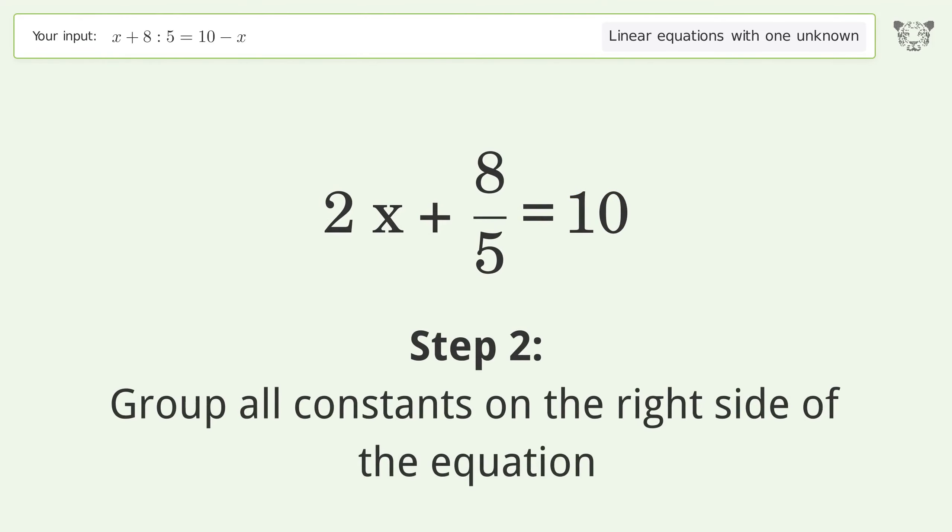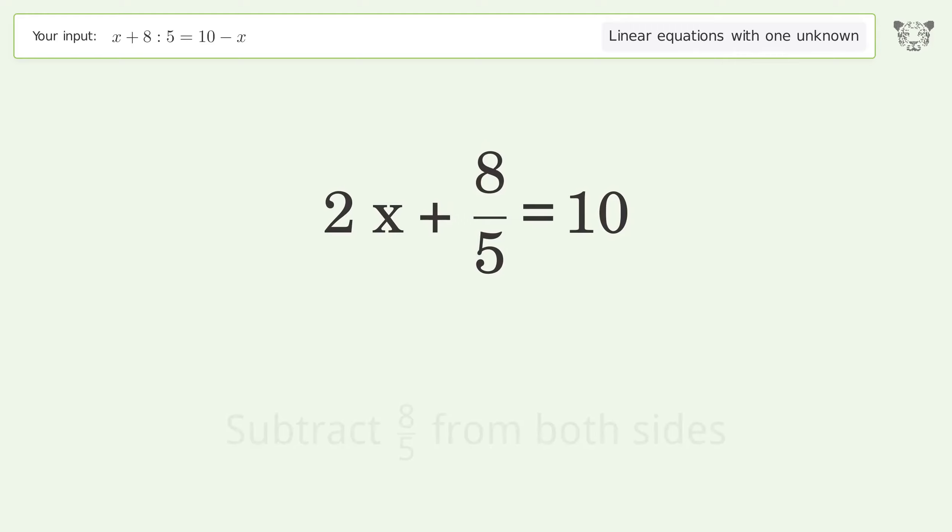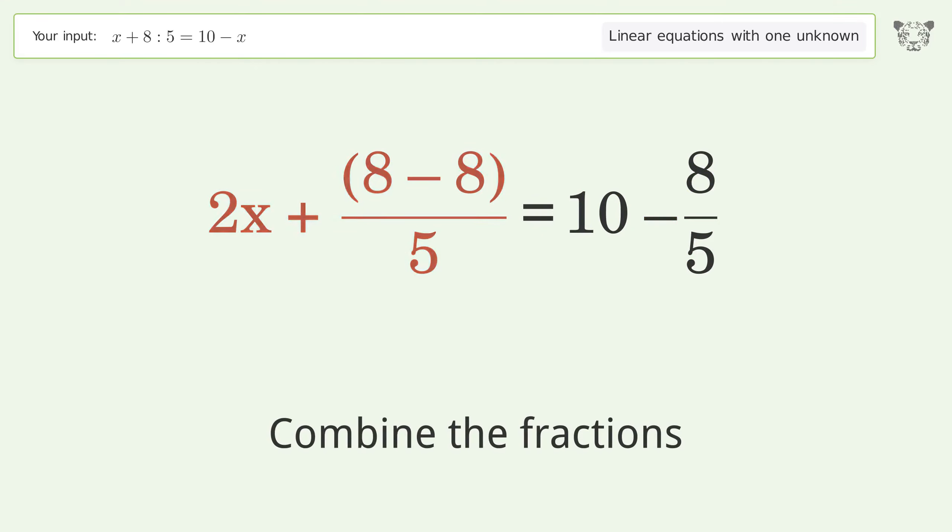Group all constants on the right side of the equation. Subtract 8 over 5 from both sides. Combine the fractions. Combine the numerators.